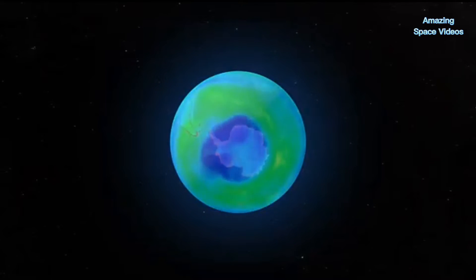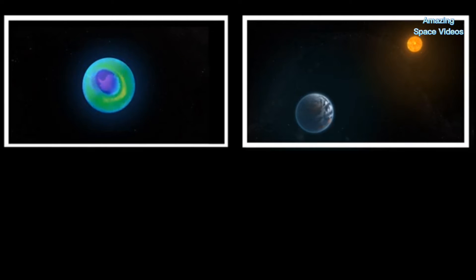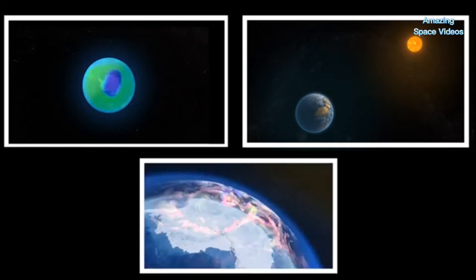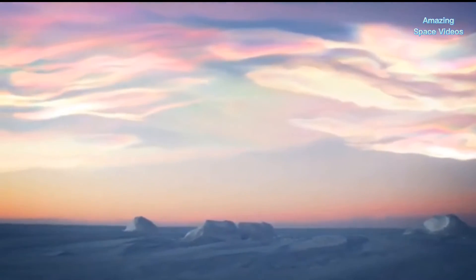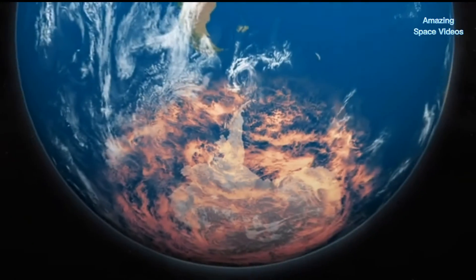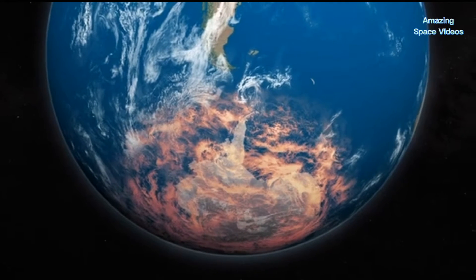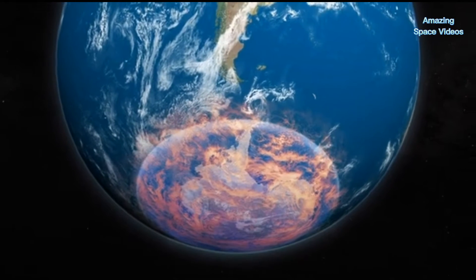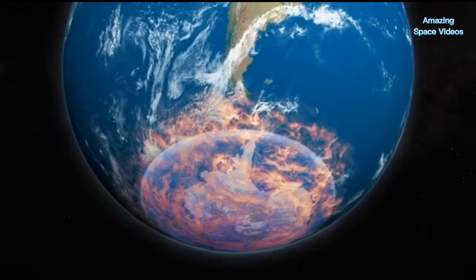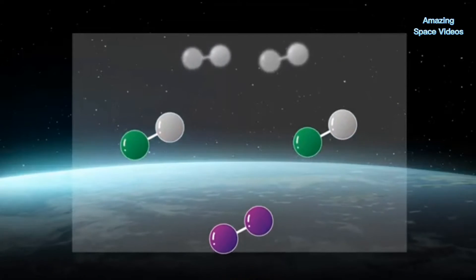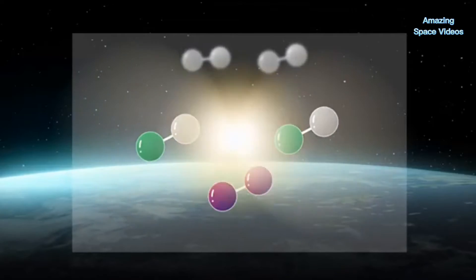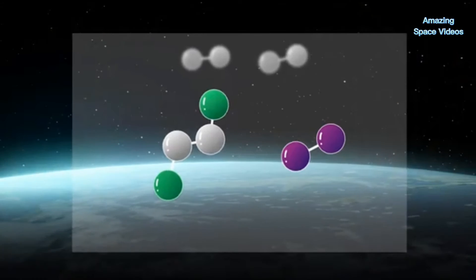The polar vortex forms in the southern hemisphere stratosphere during the winter as temperatures drop. When sunlight returns to Antarctica in late winter and early spring, temperatures are still cold enough to form polar stratospheric clouds. Now there's also sunlight — chemical reactions take place on the cloud particle surfaces, converting unreactive forms of chlorine and bromine into reactive chemicals. The vortex acts as a sort of container, confining the contents of the Antarctic stratosphere within its bounds.